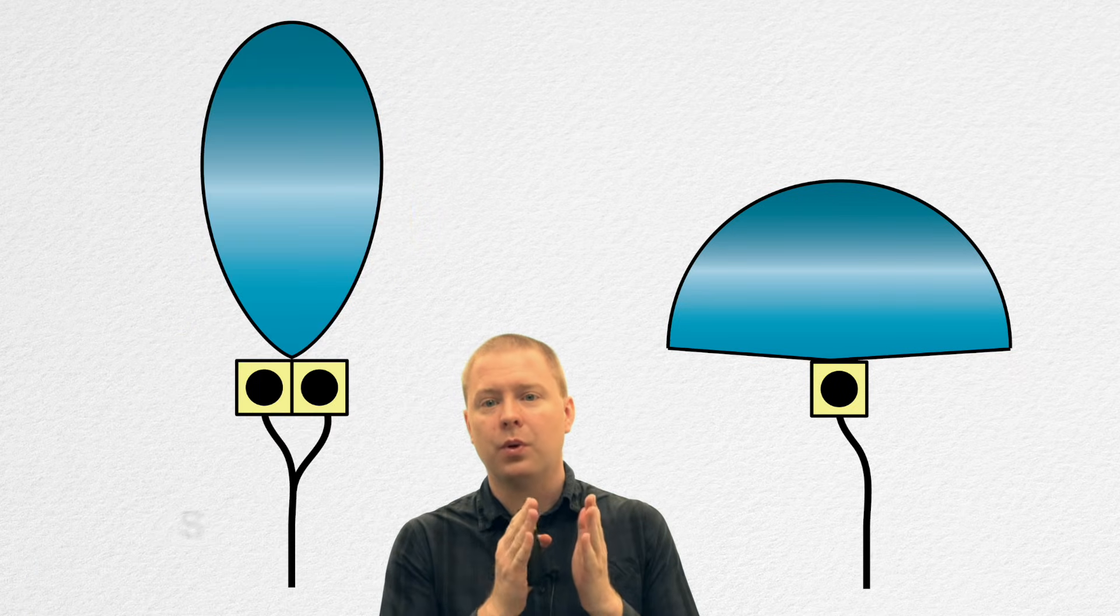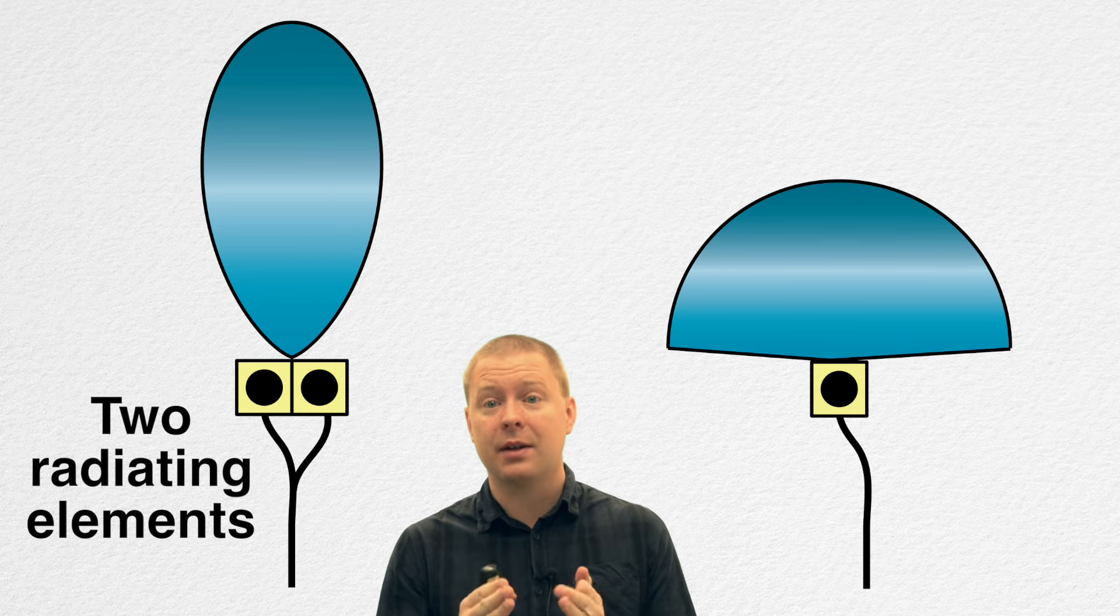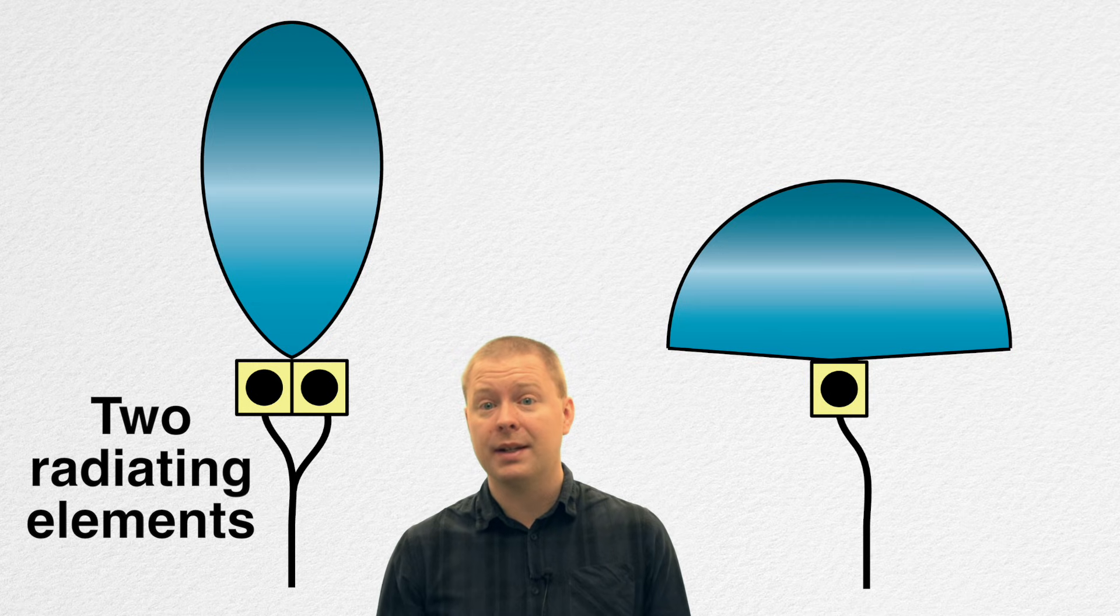If you would like the radiation to be more directive, pointing in a particular direction towards you, then you can put multiple radiating elements next to each other and feed them with the same signal. We still call this one antenna, but the signal will become more directive.